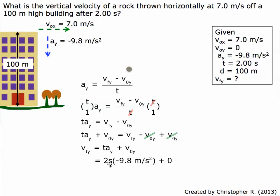Time is 2 seconds, acceleration is negative 9.8 meters per second squared, and the initial velocity in the y direction is 0. There's no downward velocity when it's thrown straight out.